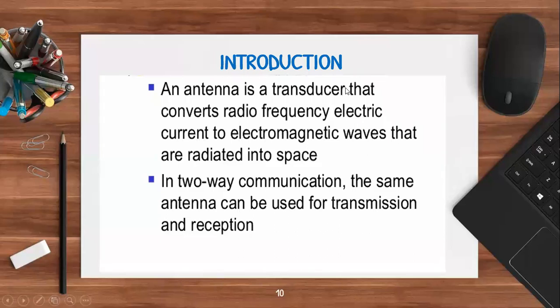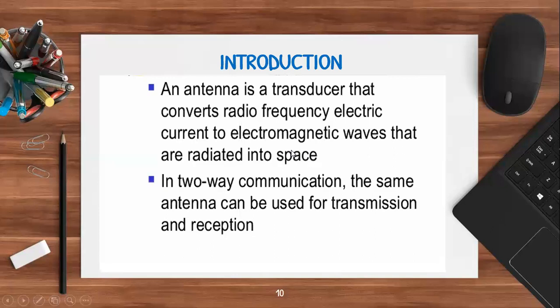In the introductory part, an antenna is a transducer — one type that converts radio frequency electric current to electromagnetic waves radiated into space. In two-way communication, the same antenna can be used for both transmission and reception. We require two antennas: one at the transmitting side and one at the receiving side, and we are interested in how the wave propagates between them.